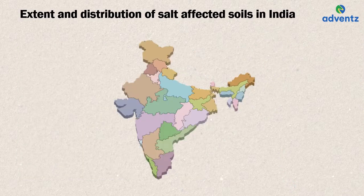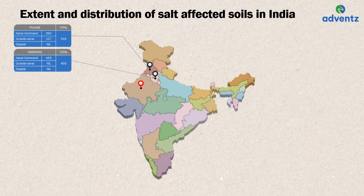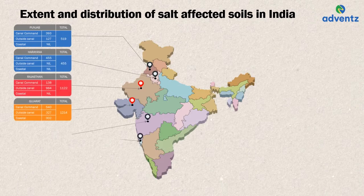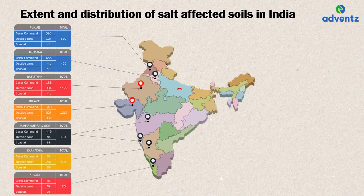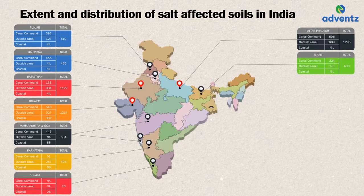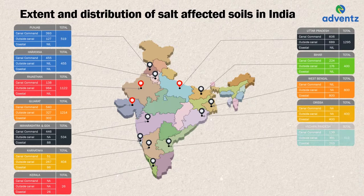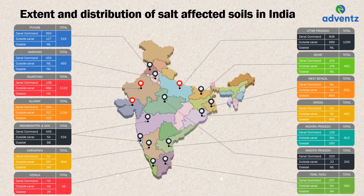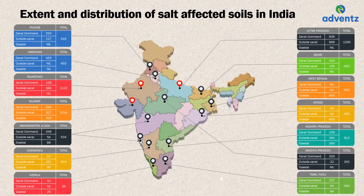In India, there is a total of 8.57 million hectares of salt-affected soil. Looking at the affected area for different states in India, Uttar Pradesh is affected the most with 1.3 million hectares, followed closely by Gujarat at 1.2 million hectares and Rajasthan.